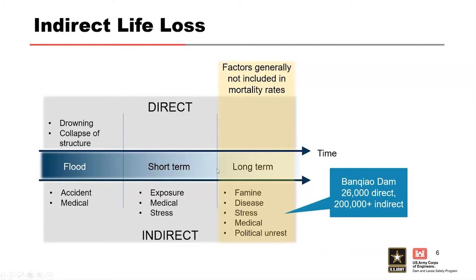Our method doesn't get into that long-term period. A lot of that has to do with data availability — the further you move from a disaster, the harder it is to attribute mortality explicitly to it. It's possible the disaster played a contributing role, but to say it was explicitly responsible for someone's death a year or two later is generally quite challenging. You need empirical evidence to support that, and with the data we have available now, it's hard to make that case. So we're generally focused on the short-term period — from the point of disaster until about three months after.